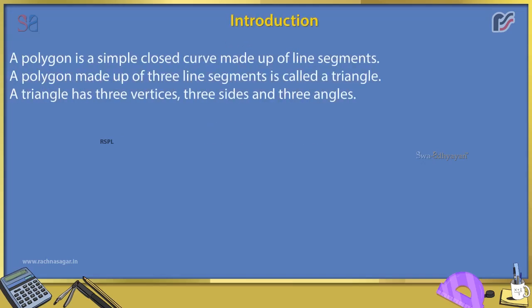A polygon is a simple closed curve made up of line segments. A polygon made up of three line segments is called a triangle. A triangle has three vertices, three sides, and three angles.